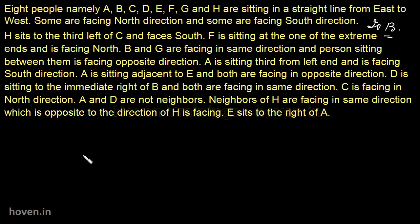First, I suggest the two-pass approach in which you make a number of passes. In the first pass, you read each of the statements and find out what is given concretely — mark that. In the second pass, revise that and keep doing that; after some time we do get the solution. The second thing is that you should not initially worry about the direction in which the people are sitting — whether north or south. Try to read as much concrete information as possible, for example the relative location.